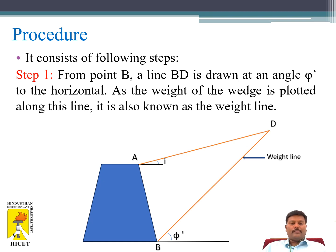Step 1: From point B, the toe point, a line BD is drawn at an angle φ' to the horizontal. As the weight of the wedge is plotted along this line BD, it is also known as the weight line.